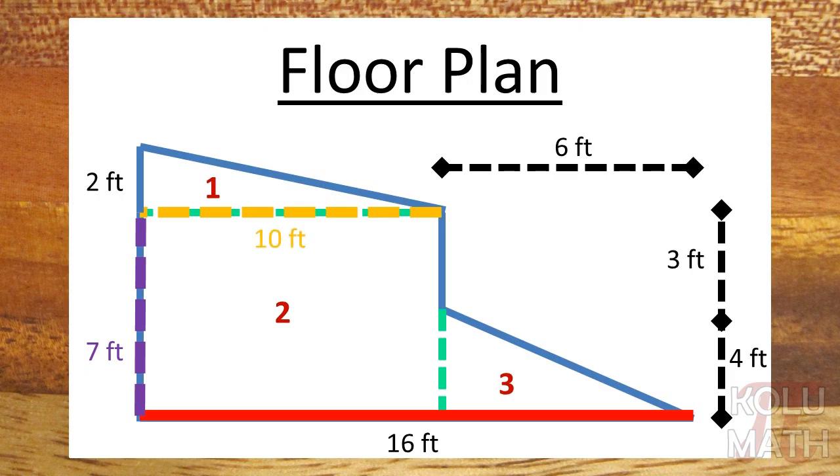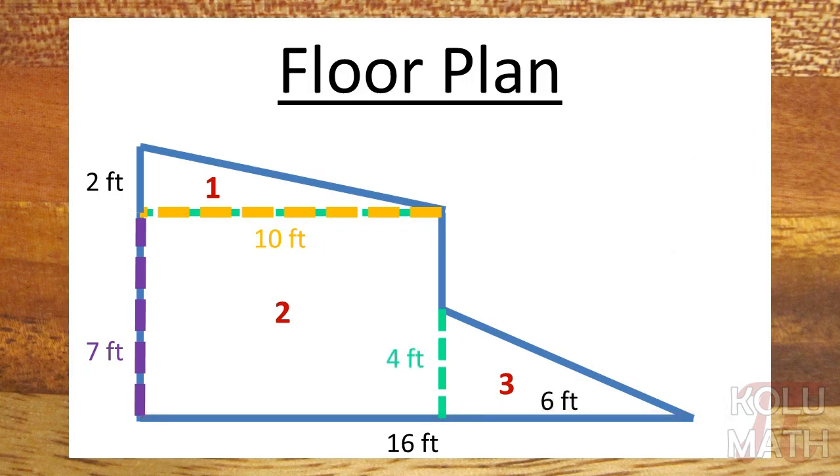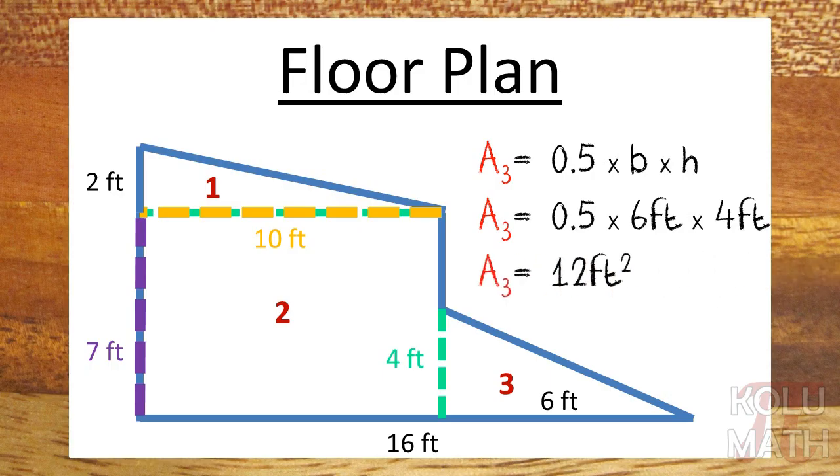So now I've figured out basically everything I need to know to solve this problem. So the area of number three would be the base of six and a height of four. Plug it on in and we get 12 feet squared. Okay.